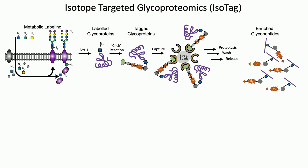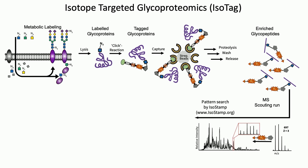But there's a trick — you might notice that embedded within that probe is the little orange star with D2. That's a probe with two deuterium atoms. Those deuterium atoms give the glycopeptides that have been chemically tagged a special pattern that a mass spectrometer can see. This makes these glycopeptides easy to find in a very complex mass spectrum using a software algorithm that we call IsoStamp, which can be downloaded freely from our website.